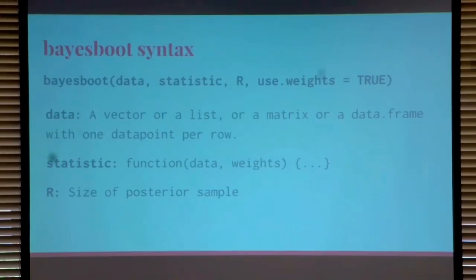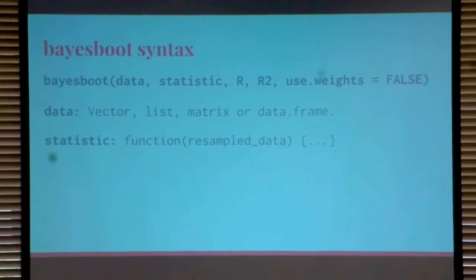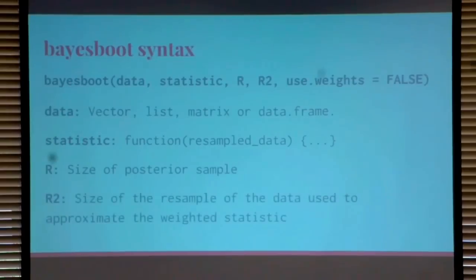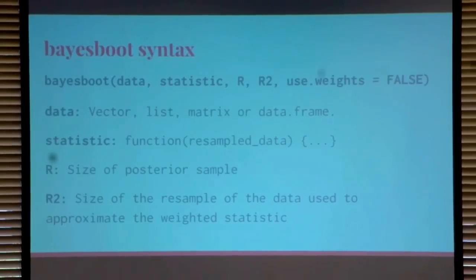There's also a flag called use_weights, which needs to be set to true if you want to use a statistic that uses probability weights. But some statistics in R don't accept probability weights, like the median. Then you can set use_weights equals false, which is actually the default. The statistic then just takes some resampled data, and R2 is the size of the resample used to approximate the weighted statistic. If you can, you should use use_weights equals true because it's more efficient.